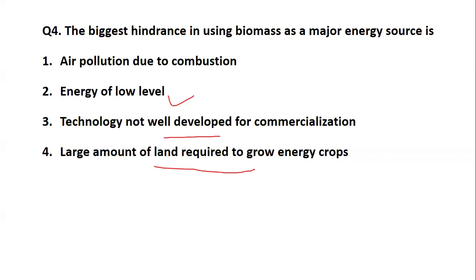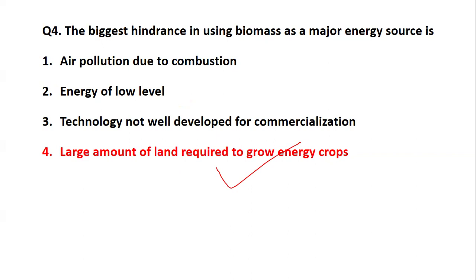Biomass is a renewable source of energy from plants and animals, but that means we need lots of plants in place. The biggest hindrance is the large amount of land required to grow energy crops. With commercialization and real estate booming, we do not have that large land requirement available, which is one of the major obstacles to biomass as a major energy source.